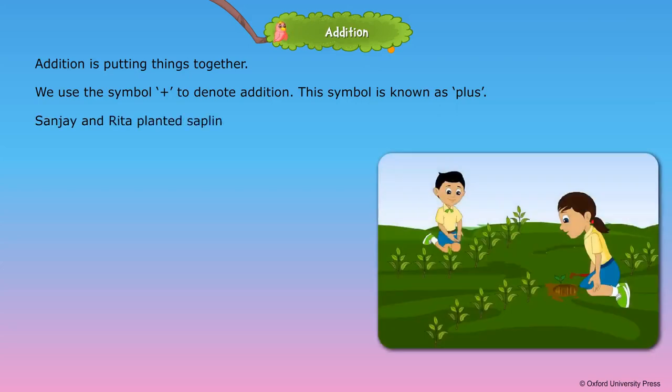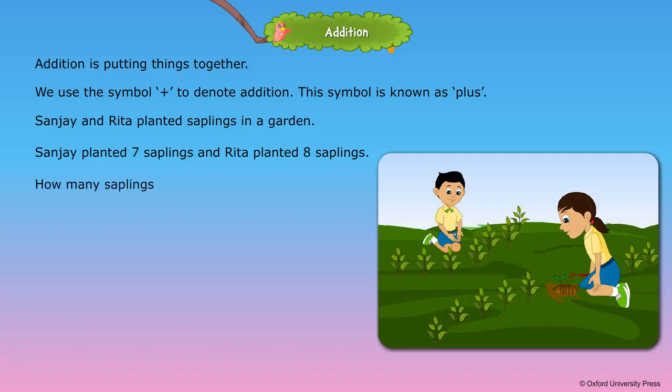Sanjay and Rita planted saplings in a garden. Sanjay planted 7 saplings and Rita planted 8 saplings. How many saplings did they plant in all? 7 plus 8 is equal to 15. Sanjay and Rita planted 15 saplings in all.